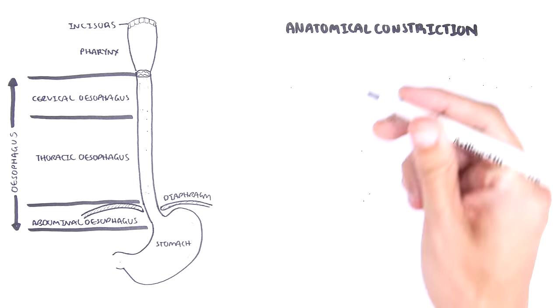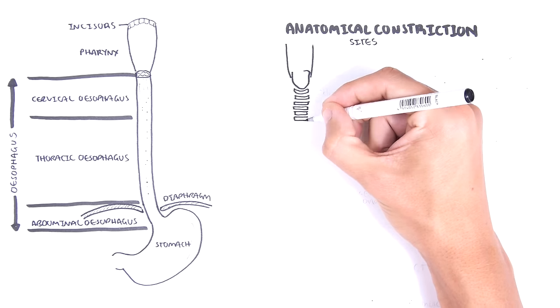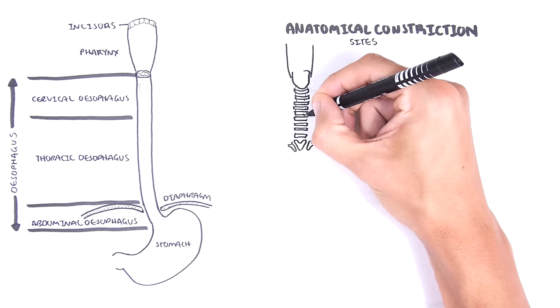Three narrow points are anatomical constriction sites of the esophagus, which is important to know. I am drawing the larynx and trachea here, running in front of the esophagus.